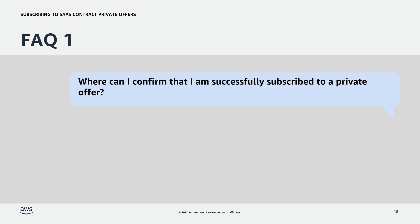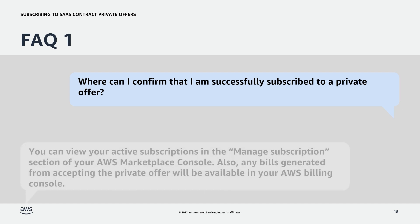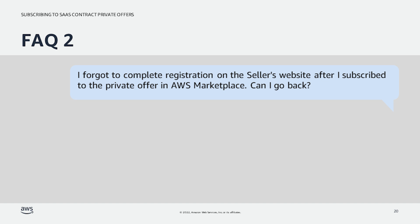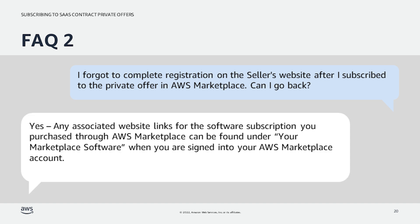Now let's go over some frequently asked questions. Question number one: Where can I confirm that I am successfully subscribed to a private offer? Answer: You can view your active subscriptions in the Manage Subscription section of your AWS Marketplace console. Also, any bills generated from accepting the private offer will be available in your AWS Billing Console. Question number two: I forgot to complete registration on the seller's website after I subscribed to the private offer on AWS Marketplace. Can I go back? Answer: Yes. Any associated website links for the software subscription you purchased through AWS Marketplace can be found under Your Marketplace Software when you are signed into your AWS Marketplace account.